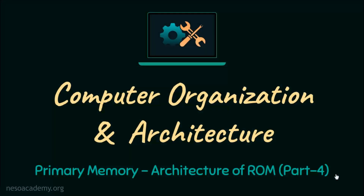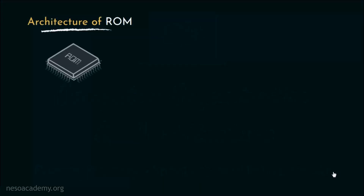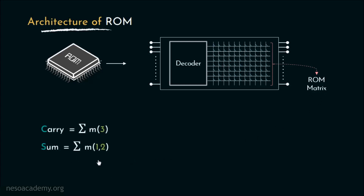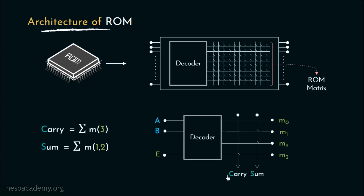Hello everyone and welcome back. In the last couple of sessions we have been studying about decoder expansion procedures. In this session we will learn what impact they have on the architecture of ROM. Now we already know that within a ROM chip there is a decoder circuit and a ROM matrix. During the session on introduction to primary memory, we embedded the half adder logic — that is the carry and the sum functions — within a ROM circuit.